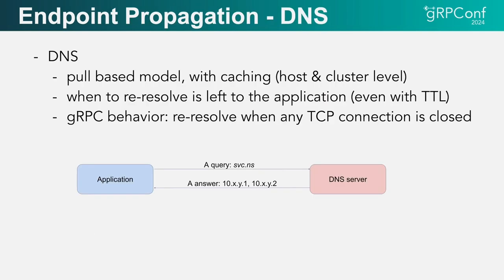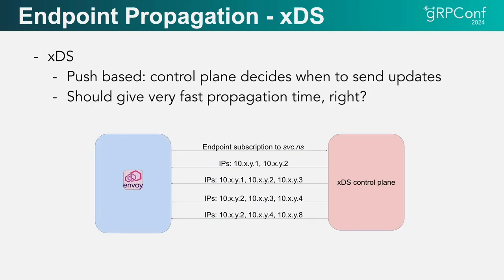How does that impact endpoint propagation time? DNS has a pull-based model with caching at various layers, and when to re-resolve is left to the application. In the case of gRPC, we re-resolve whenever a TCP connection is closed. That's a reasonable behavior, but it's not the best within the data center. XDS, on the other hand, is a push-based model. The control plane decides when to send updates and when data planes are going to use the new IP addresses, so that should give you faster propagation time.